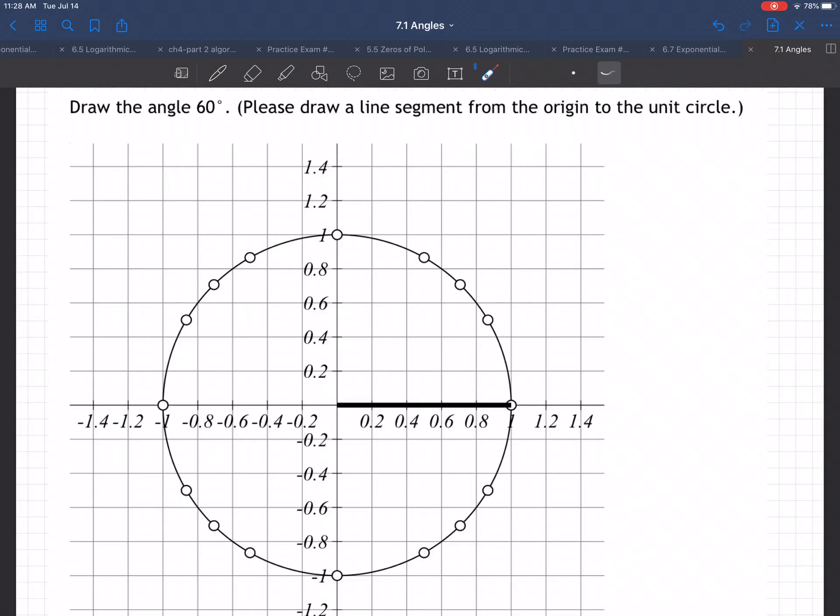Welcome to an example where we're starting off with angles. So we're talking about angles. They want us to draw a 60 degree angle in particular. This is the unit circle.